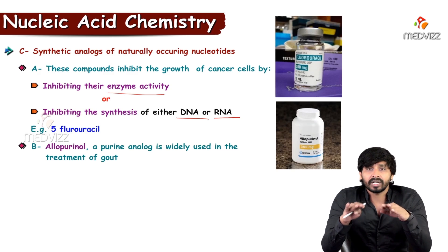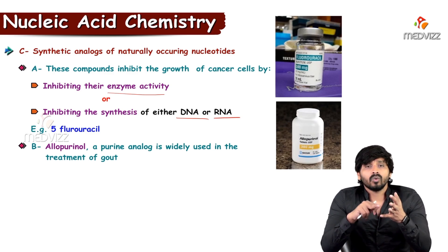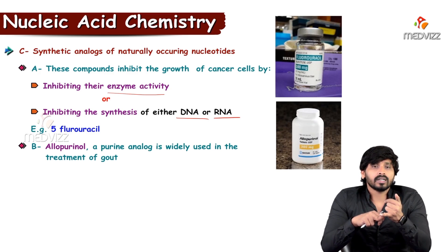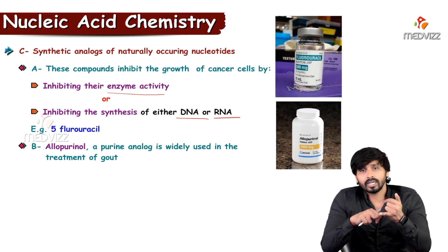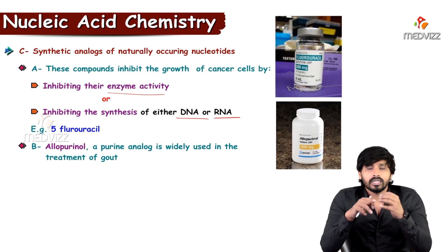Allopurinol inhibits the enzyme that produces uric acid. It participates in the reaction and converts xanthine/xanthic acid to alloxanthin. Compared to uric acid, alloxanthin is more soluble and is easily excreted. These are the commercial purposes of nucleotides.